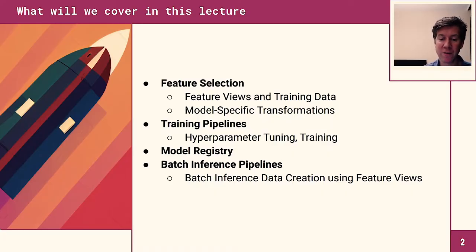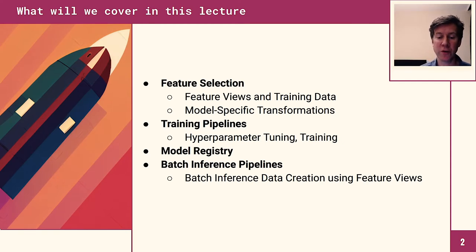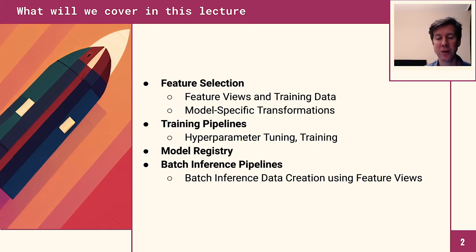To get started on feature selection we're going to look at something called a feature view — a set of features that you select from the feature store to train models with — how you can create training data and feature vectors from a feature view, and how we can do model-specific transformations with the feature view.